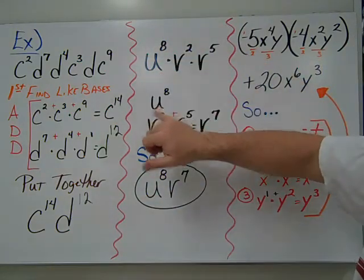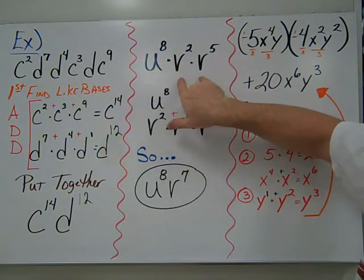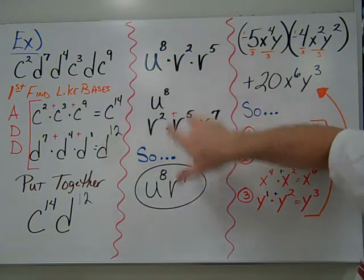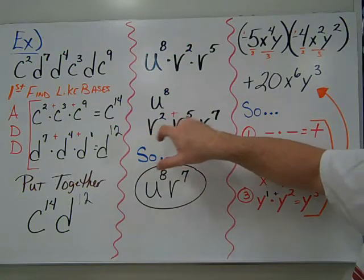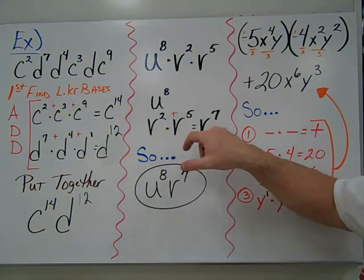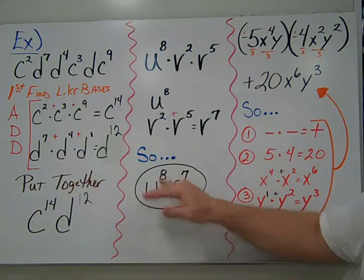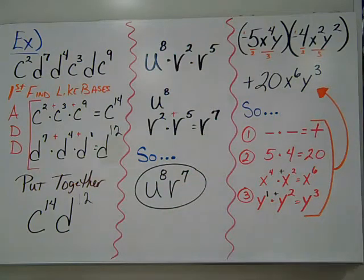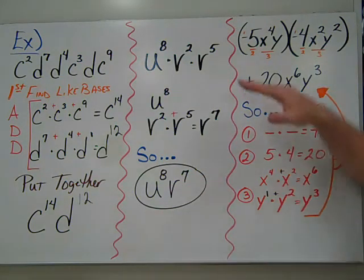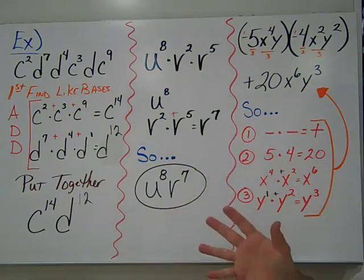Here we have u to the eighth all by itself, and two like bases v squared and v to the fifth — so we add the powers to get v to the seventh. Our answer becomes u to the eighth times v to the seventh.